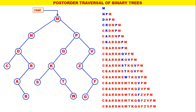So, the post-order for this binary tree is C, B, A, R, D, N, S, W, T, K, Q, G, F, Z, V, P, M. This is the post-order traversal for the given binary tree.